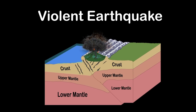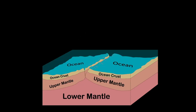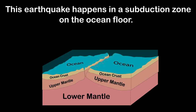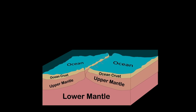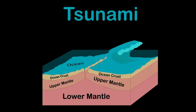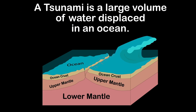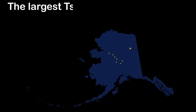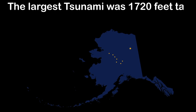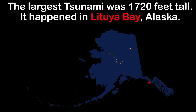This is the same type of earthquake that rocked Nepal in 2015 — the Gorkha earthquake. When a quake in a subduction zone happens on the ocean floor, it can create a tsunami or tidal wave. A tsunami, also called a seismic sea wave, is a large volume of water displaced in an ocean or large lake. The largest tsunami ever recorded was 1,720 feet tall in Alaska.